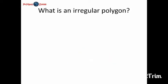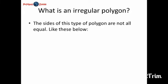What is an irregular polygon? Think about it. Right, because last lesson, we would have done regular polygons, and we know that regular polygons are those polygons where all the sides are the same in length. So, in an irregular polygon, we know all the sides are not equal, just like this below.